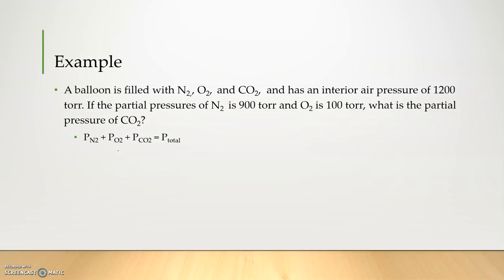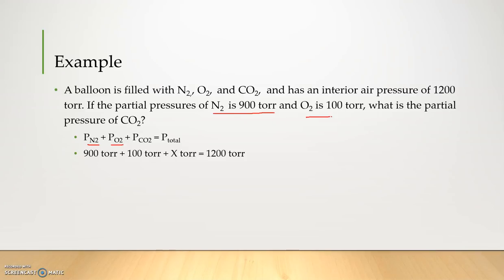This question is asking us for the partial pressure of carbon dioxide, and it gives us the partial pressure of nitrogen and of oxygen. Our partial pressure of nitrogen is 900 torr and our partial pressure of oxygen is 100 torr, so we can plug these into our equation. The partial pressure of carbon dioxide is our unknown — we can represent that with x — and we know that the total pressure of our system is 1200 torr. So if we solve for x, we subtract 900 and subtract 100 from both sides. We end up with a partial pressure of carbon dioxide equaling 200 torr.